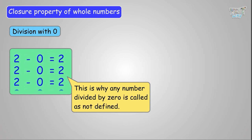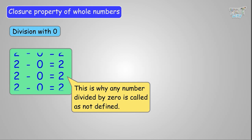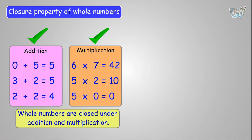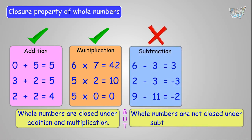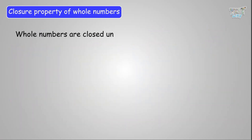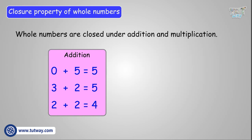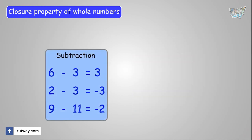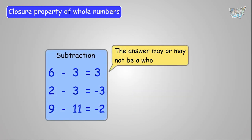So that was all about the closure property. Whole numbers are closed under addition and multiplication — add or multiply any two whole numbers and you will get a whole number. But whole numbers are not closed under subtraction and division, because the answer may or may not be a whole number.